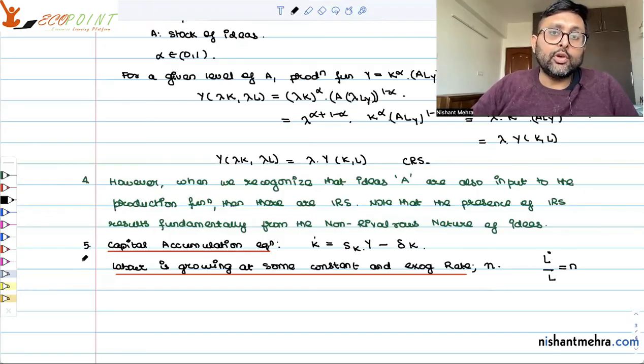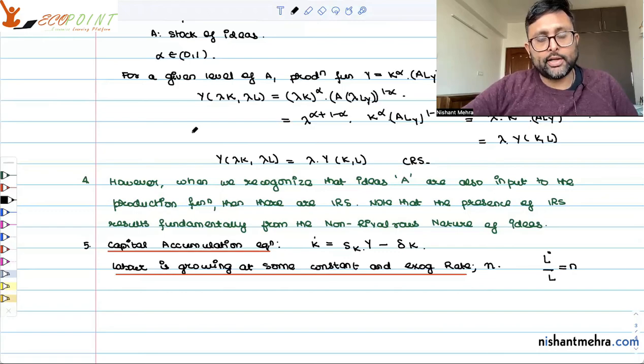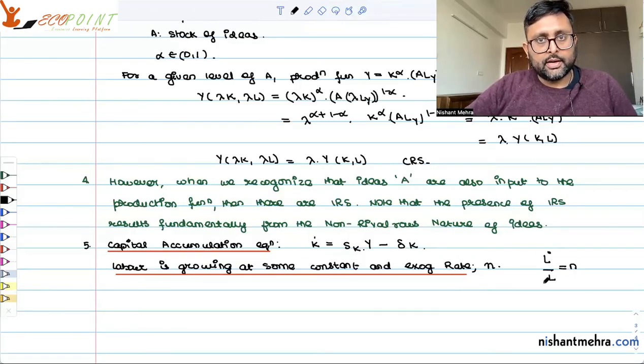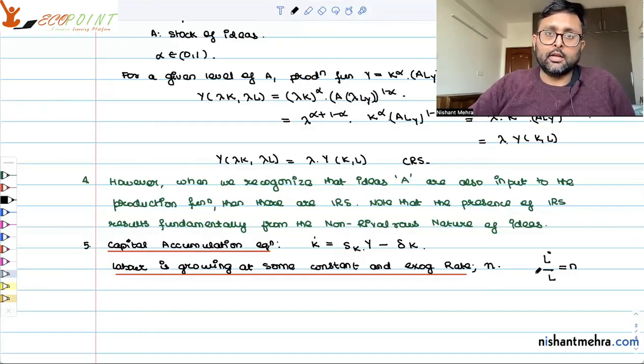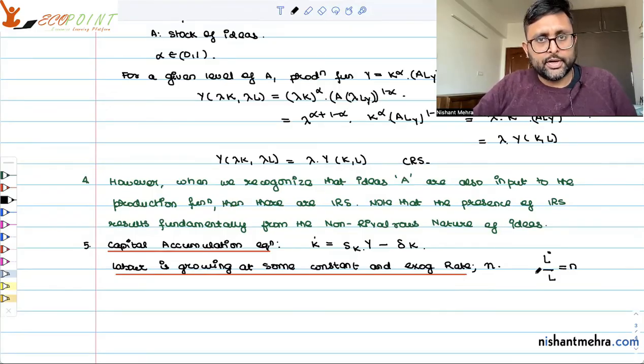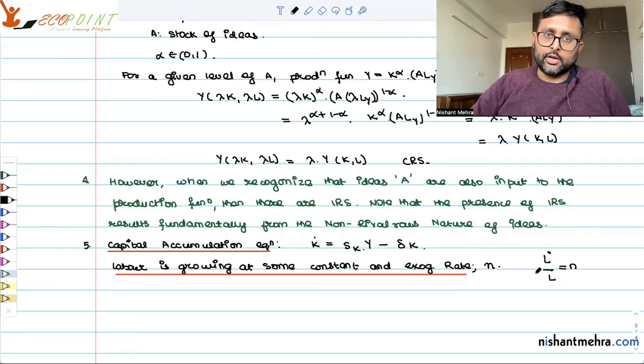Next recording we will see how technology is developing, how a dot is changing. If you have three inputs in the production function - first capital, its growth equation, labor's growth equation - now we need the equation for how technology is growing. And this is different from Solow model because in Solow model we assumed technology is growing exogenously at some rate, but here in Romer model we will be talking about how technology is growing and what factors it depends on. So we will be talking about that in the next recording.